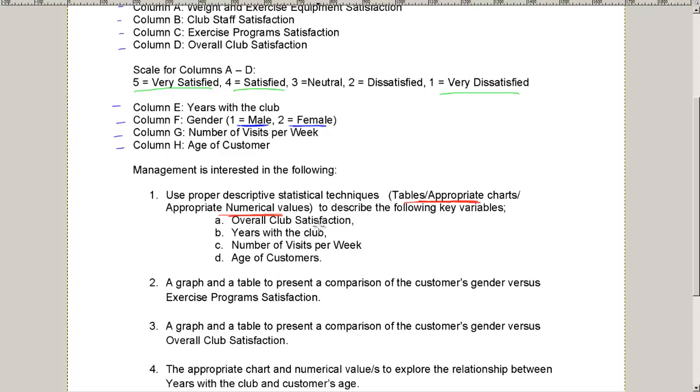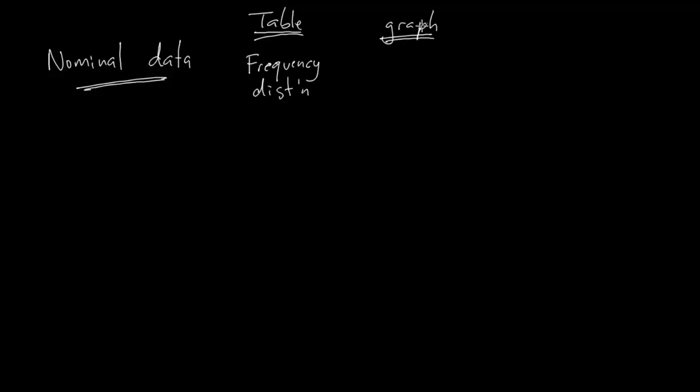So a graph or a chart, the appropriate graph or chart for nominal data is going to be the bar chart. Now you might be thinking about a pie chart. They do that in my textbook. Pie charts are for nominal data,